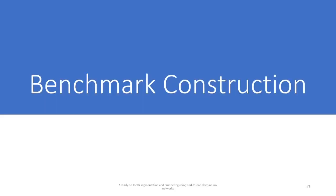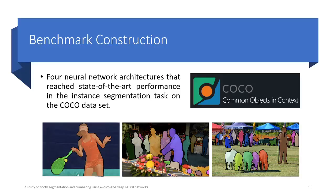Now, let's talk about how we construct the benchmark of this study. The first step of the benchmark construction was the selection of the neural network architectures. We selected four architectures that reach state-of-the-art performance in the instance segmentation task on the COCO dataset. All these architectures belong to the two-stage detectors family. In the following slides, I'll briefly comment on each architecture and on their novelties.